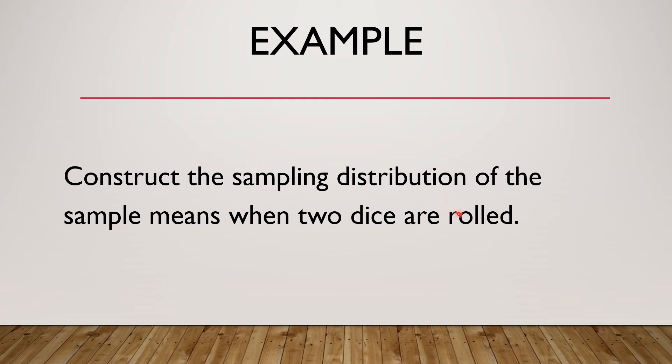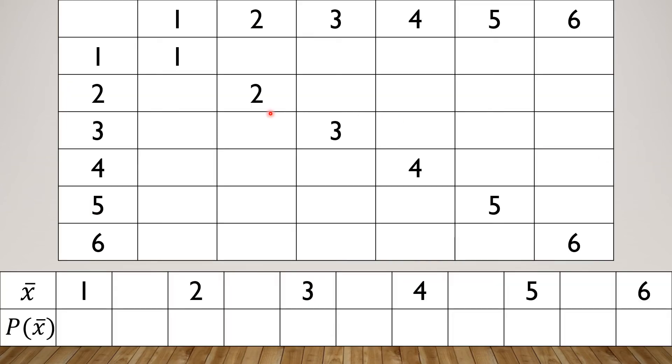Construct the sampling distribution of the sample means when two dice are rolled. As you can see, these are the faces of a die, and we have here 1 and 1 as 1 because the mean of 1 and 1 is 1. For 2, we have 2; for 3, we have 3; for 4, we have 4; for 5, and 6.